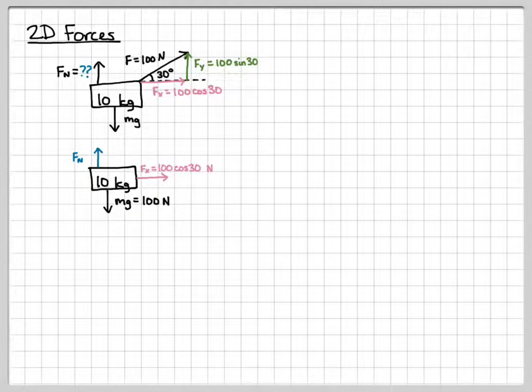Let's redraw it so that all our forces are either parallel or perpendicular to our axes. So the x component was 100 cosine 30, the y component was 100 sine 30. So we like this picture better. Everything is parallel or perpendicular to our axis.